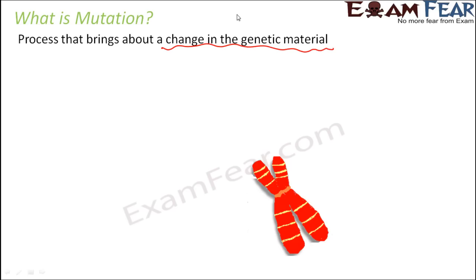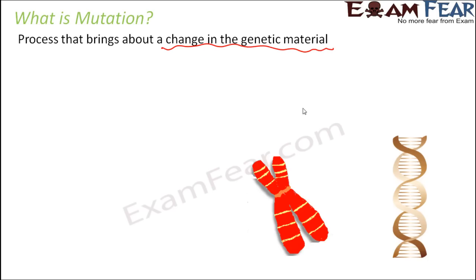When we say a change in the genetic material, we should be clear about what the genetic material is. Chromosomes carry the genes, and genes contain the genetic material — these yellow structures represent the genes. Genes in turn are made up of nucleic acids in the form of DNA. DNA has two strands forming a double helical structure with a specific sequence of bases that keeps the strand intact.